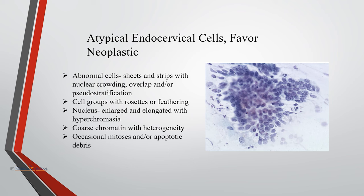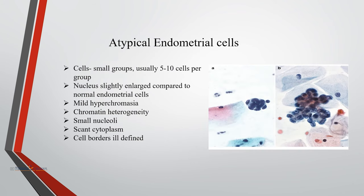Atypical endocervical cells, favor neoplastic: when abnormal cells are arranged in sheets and strips with nuclear crowding, overlap, and pseudostratification, cell groups with rosette or feathering can be seen. The nucleus is enlarged and elongated with hyperchromasia, and coarse chromatin with heterogeneity can be seen. For atypical endometrial cells, cells are originally in small groups of usually five to ten cells per group, with the nucleus slightly enlarged compared to a normal endometrial cell, showing mild hyperchromasia and chromatin heterogeneity with small nucleoli and scant cytoplasm with ill-defined cell borders.